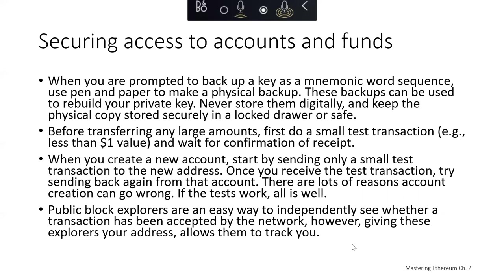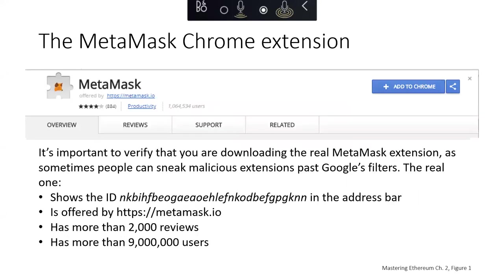Let's take a look at the first wallet we're going to play around with, which is MetaMask. I'm going to show you an example of installing it in Chrome. When downloading a browser extension, make sure you're downloading the real MetaMask extension — sometimes hackers will sneak in a malicious version. The real one will show that it's coming from MetaMask.io and will show it has over 9 million users and over 2,000 reviews.